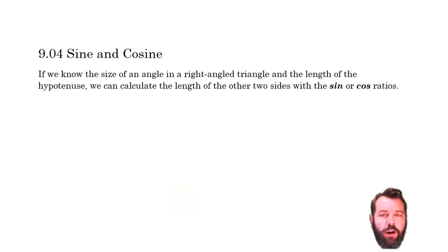Now, if we know the size of an angle in a right-angle triangle, this is what we need to know to use sine or cosine. We need to know it's a right-angle triangle, we need to know one of the angles, and for now we need to know how long the hypotenuse is. So if I know the hypotenuse and one of the angles, then I can find either of the other two sides.